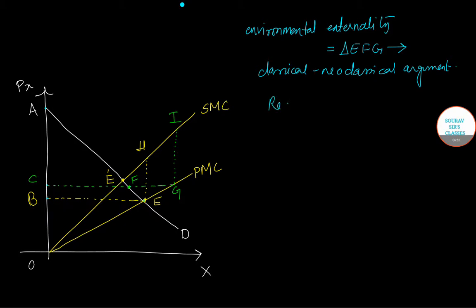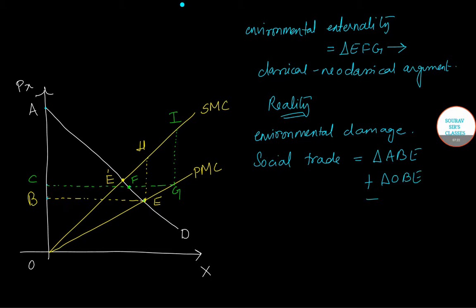Had there been no trade, the social welfare in case of no trade will be given by triangle ABE plus triangle OBE. However, you need to deduct a part, what part? That is OHE, this triangle. So triangle OHE needs to be deducted.